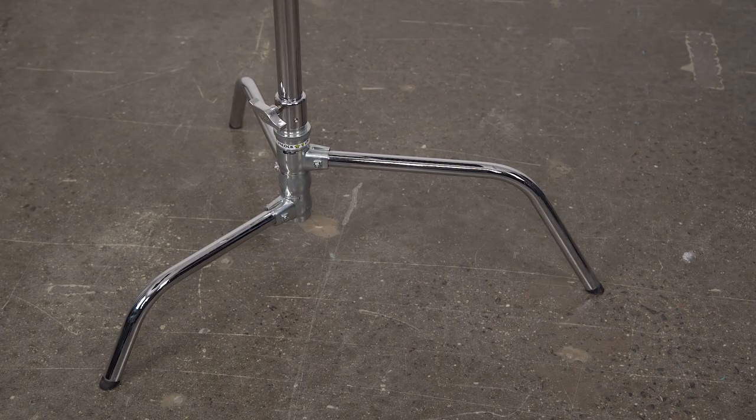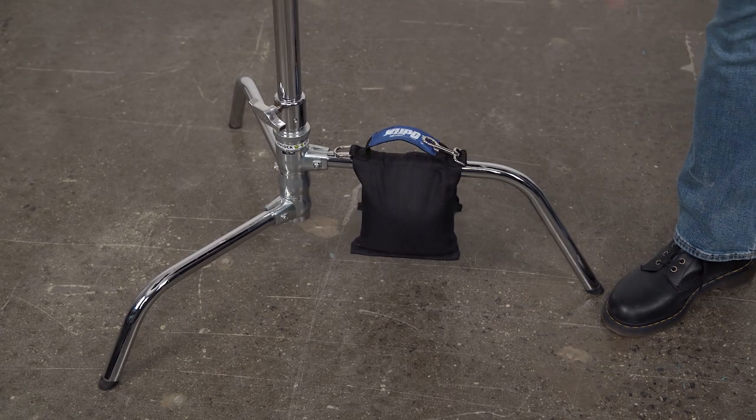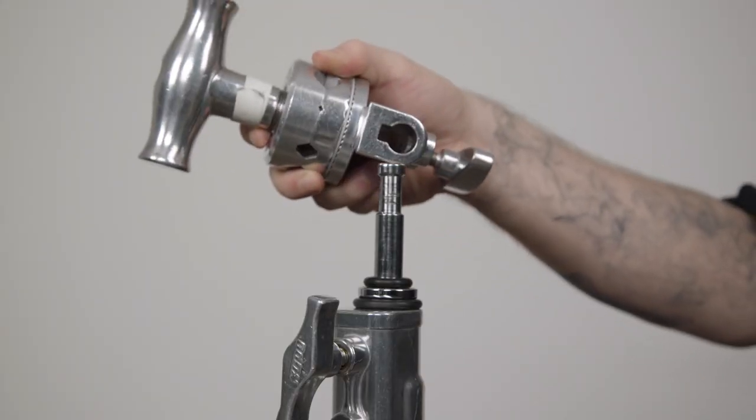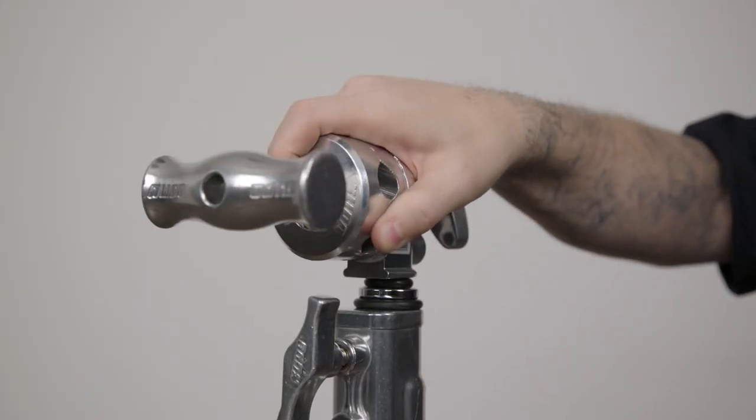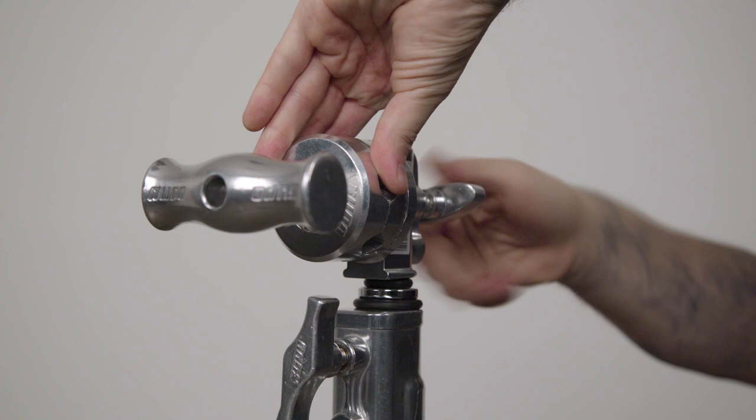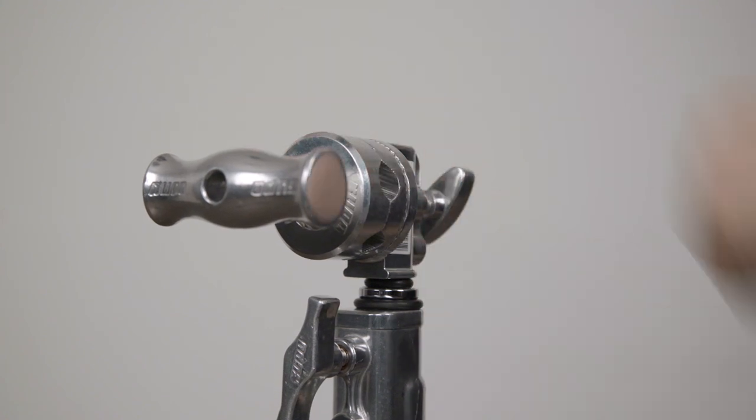Let's mount a piece of foam core to the end of a grip arm. First we'll throw a sandbag on the c-stand's base. Slide the baby receiver of the grip head onto the baby pin of the c-stand and secure, making sure that the big T handle is facing you.